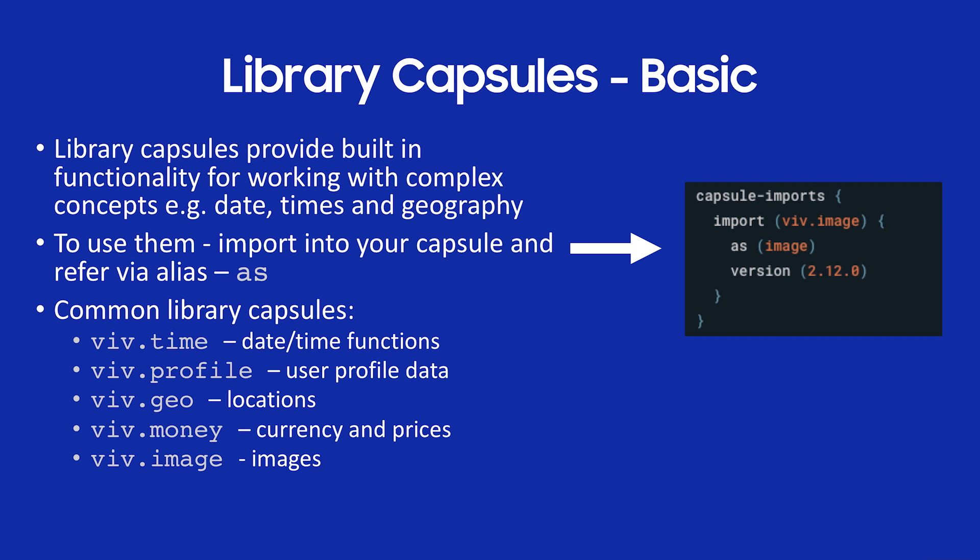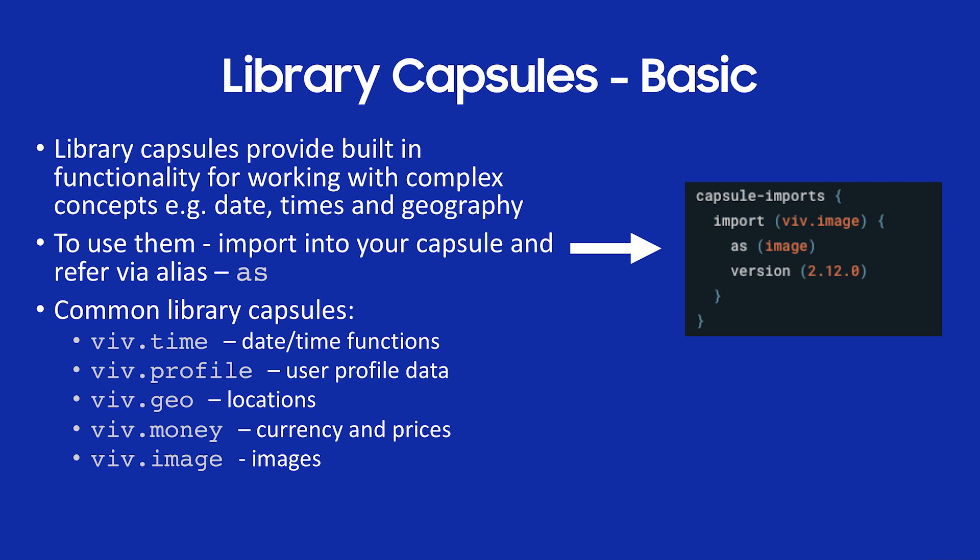Library capsules — I'll give a high-level overview. These are built-in functionality that work with complex concepts: date, times, geography, etc. The whole idea is that the code has been pre-written for you. To use them, you import them in your capsule.bxb file. For example, I'm importing viv.image aliased as 'image' with a version number. Common library capsules include time, profile, geo (locations), money, currency, prices, and viv.images. Definitely become familiar with these because they can save you from writing an awful lot of code.